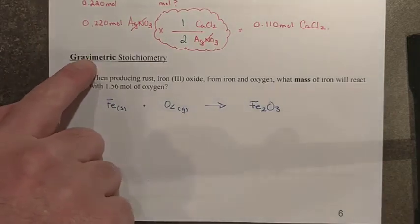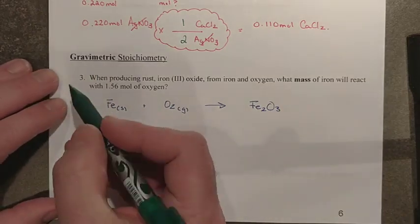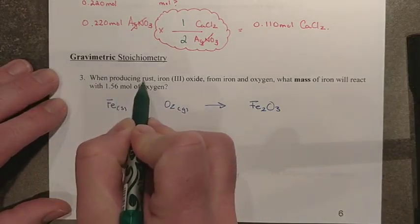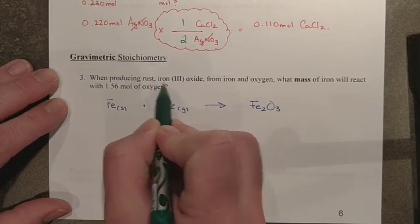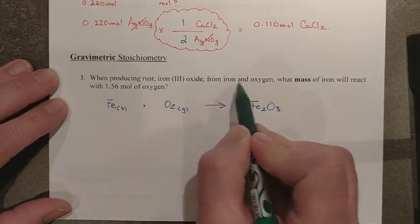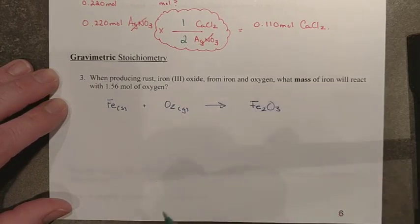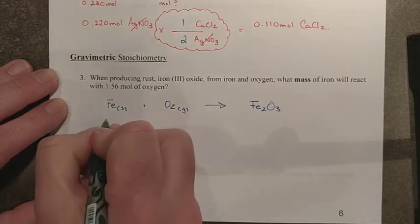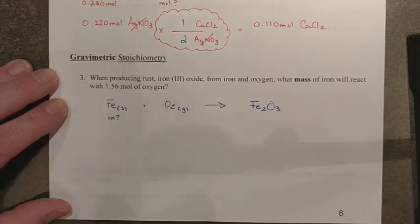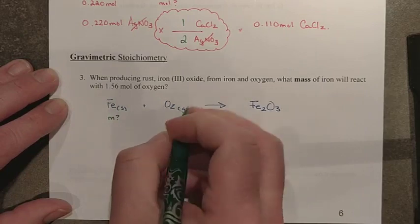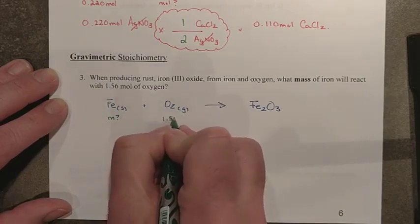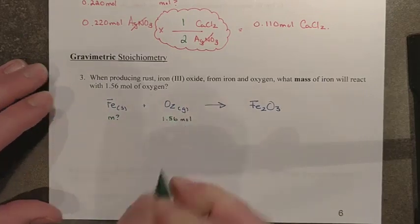And when you think gravity, we tend to think mass and weight. So hence that. It says, when producing rust, iron three oxide, right there, from iron and oxygen, what mass of iron will react? So we're looking for a mass of iron with 1.56 moles of O₂.